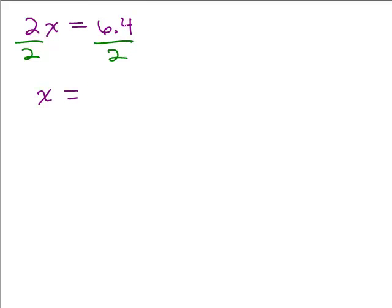Now we just have to do 6.4 divided by 2. So you want to have a whole number in the bottom, which we do have. And then we could think of this as just 64 divided by 2, which is 32. And then we have to go in one place because the numerator has one decimal place. So if it's a whole number in the denominator, you just go in the same number of places as the top.